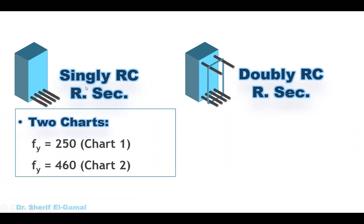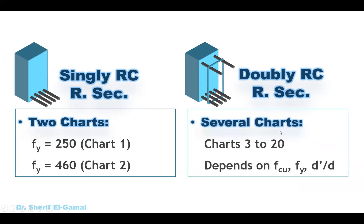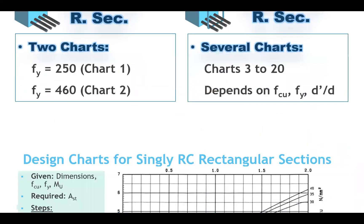For singly reinforced concrete rectangular sections we have only two design charts in the BS code — one for FY yield 250 and the other for FY yield 460 megapascal. For doubly reinforced concrete rectangular sections we have several charts starting from chart number 3 to chart number 20. We have many charts because it depends on the concrete compressive strength, the FY yield, and the D-dash over D. Let's start and learn together how to use these charts.